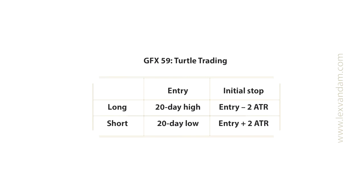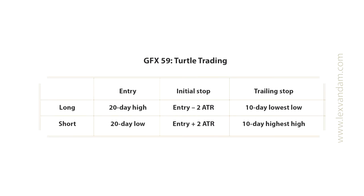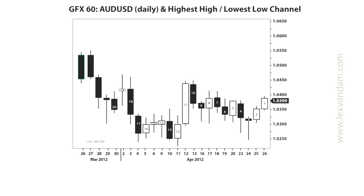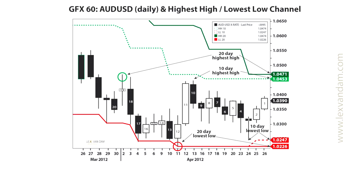Using an ATR stop ensures that the stop fits the volatility of different currencies and different circumstances. On top of that, a trailing stop is also used. For a long position it is set at the lowest level the currency has traded during the previous 10 days, and for a short position the highest level of the previous 10 days. Whichever of these initial and trailing stops is reached first is used. This chart shows the 20-day highest high and lowest low, and also the 10-day highest high and lowest low. The 20-day channel is the wider one, shown by the green and red lines, whereas the 10-day channel is the tighter one, bordered by the dashed line.